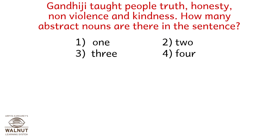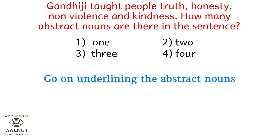Gandhiji taught people truth, honesty, non-violence and kindness. How many abstract nouns are there in the sentence? Go on underlining the abstract nouns: truth, honesty, non-violence and kindness. So the correct answer is option 4 — four abstract nouns.